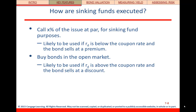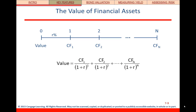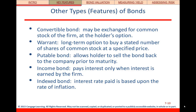Now we're ready to start doing bond valuation. A bond is a combination of an annuity and a lump sum payment: we have periodic cash flows from the coupon payments, and then a lump sum at maturity. That's effectively what we see in this timeline and this generic formula.